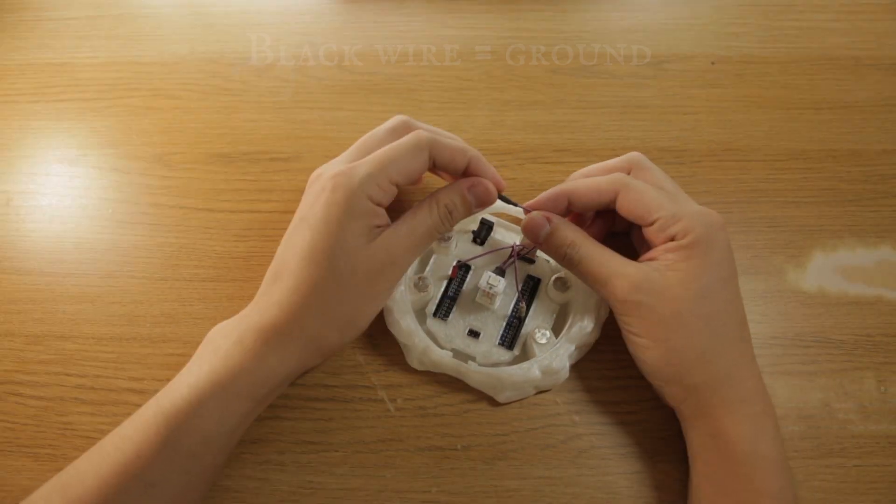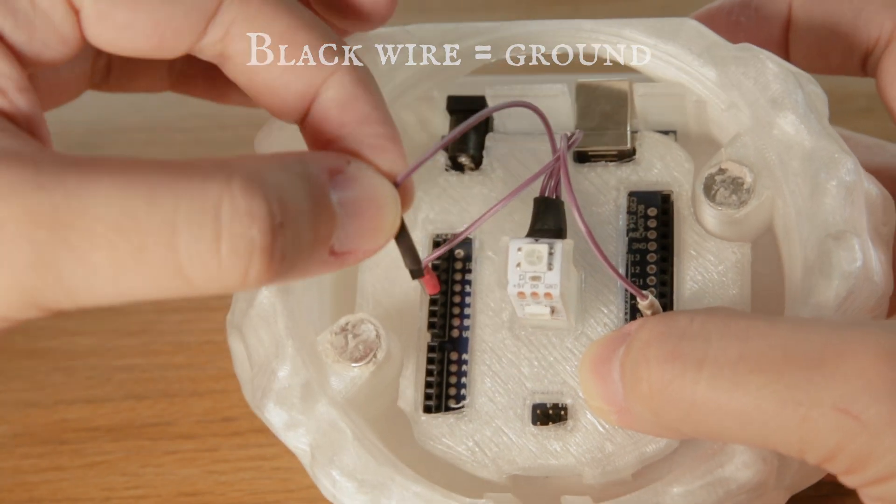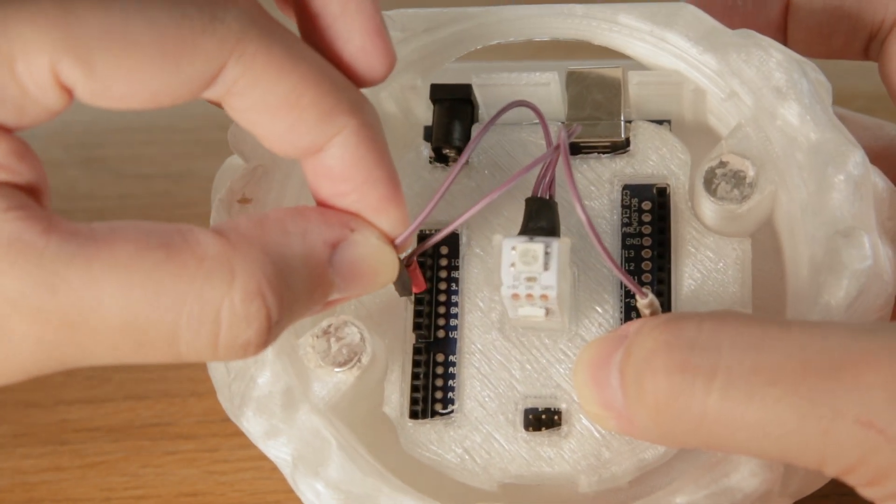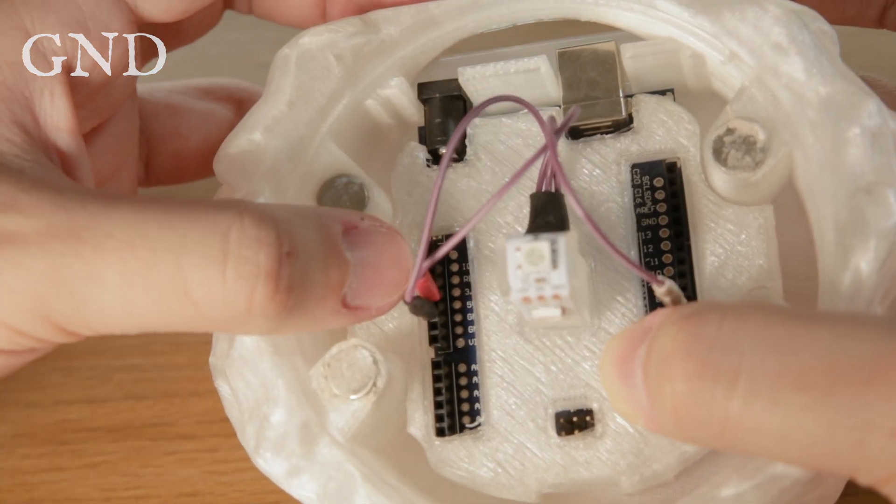Finally, the wire marked with the black tag. That is ground and we'll be plugging that into the port marked GND, which is probably next to your five volts.